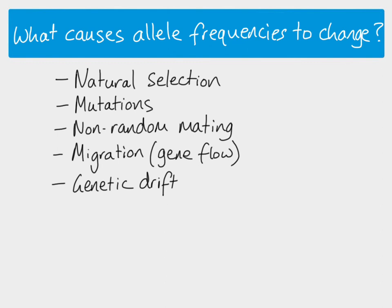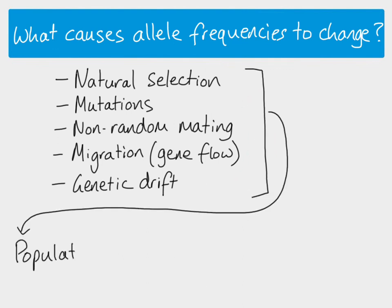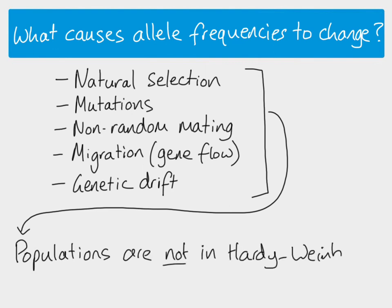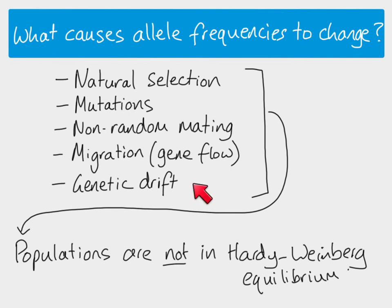The important thing here is that if all of these cause the allele frequencies to change, and are all causes of evolution, then populations undergoing any of these cannot be in Hardy-Weinberg equilibrium. Hardy-Weinberg equilibrium is when allele frequencies are not changing. For that to happen, there has to be no natural selection, no mutations, random mating, and no genetic drift. Only if all of those are true will you have a population that is not evolving, and therefore a population in Hardy-Weinberg equilibrium. To get a population in Hardy-Weinberg equilibrium is actually very unusual, because one of these things will normally be taking place.